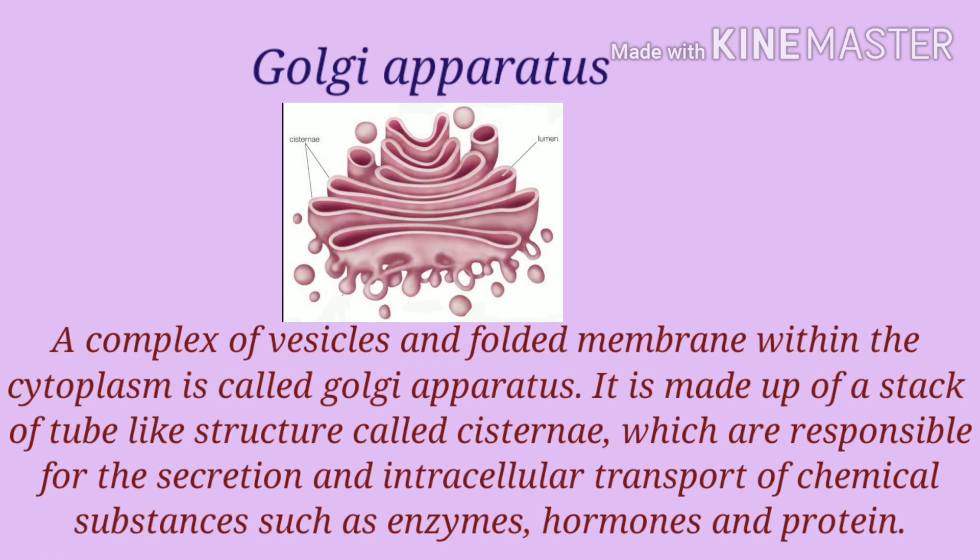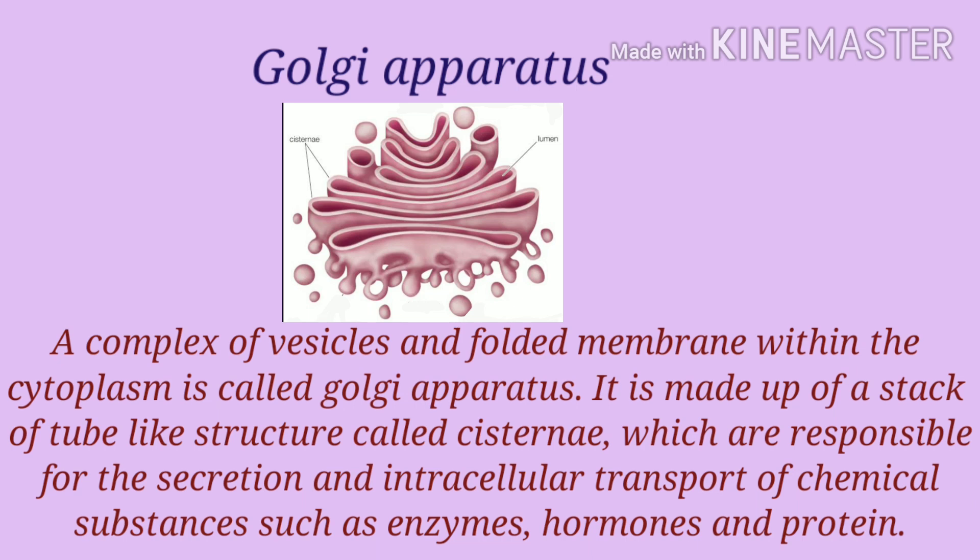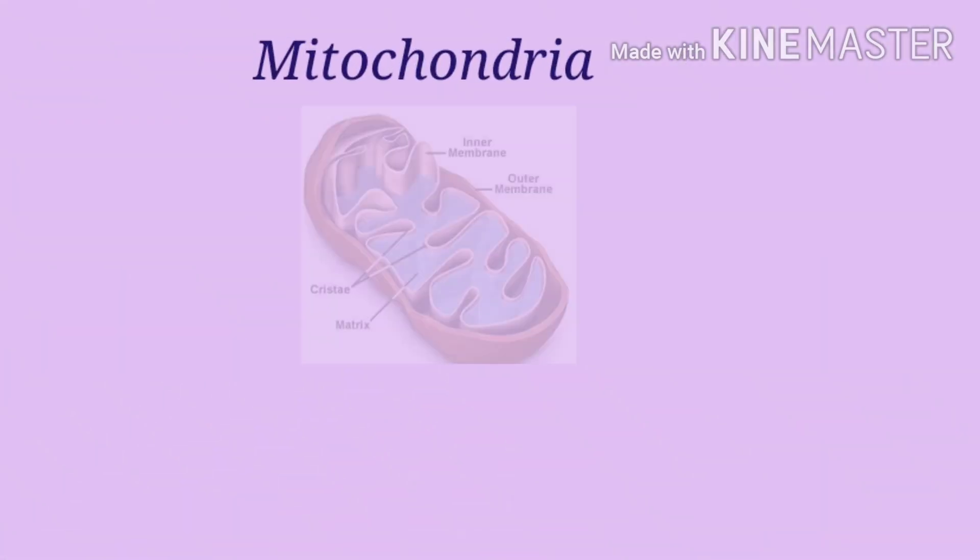A complex of vesicle and folded membrane within the cytoplasm is called Golgi apparatus. It is made up of a stack of tube-like structures called cisternae, which are responsible for the secretion and intercellular transport of chemical substances such as enzymes, hormones and protein. Next one is mitochondria.